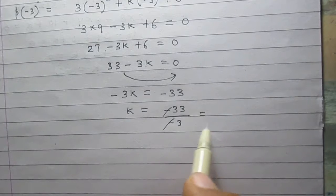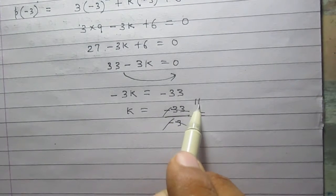Negative signs are cancelled. 3 multiplied by 11 is 33.